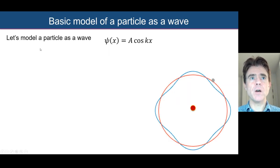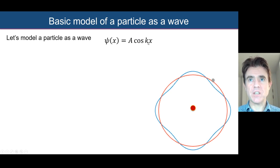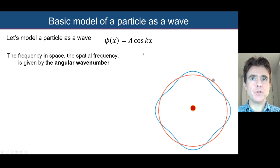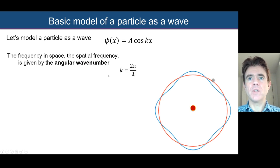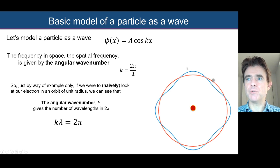Let's start by modelling a particle such as the electron as a wave function. We'll use a simple cosine function of a particular spatial frequency k, called the angular wave number. We define k as 2π divided by lambda — it tells us how many wavelengths fit into 2π. For example, if lambda equals 2π then k equals 1.